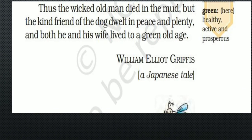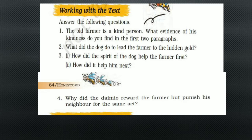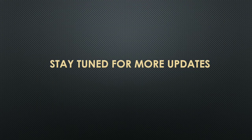The wicked old man died there in the mud after receiving that punishment. But the kind friend of the dog — the good old man — dwelt in peace and plenty. 'Plenty' means he received many good things from the Damio. Both he and his wife lived to a green old age — meaning a healthy, active, and prosperous life — because they were kind to every person and had treated their dog like a baby. In return, the dog had helped them twice. These are the question answers for the chapter; try to find the answers yourself first.